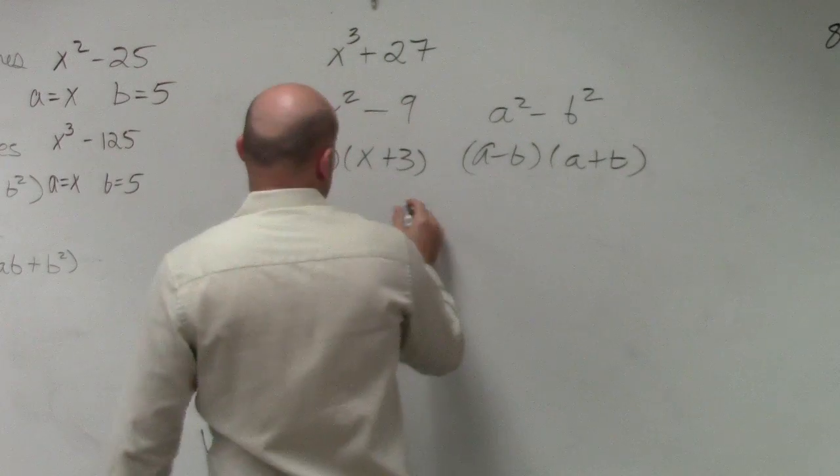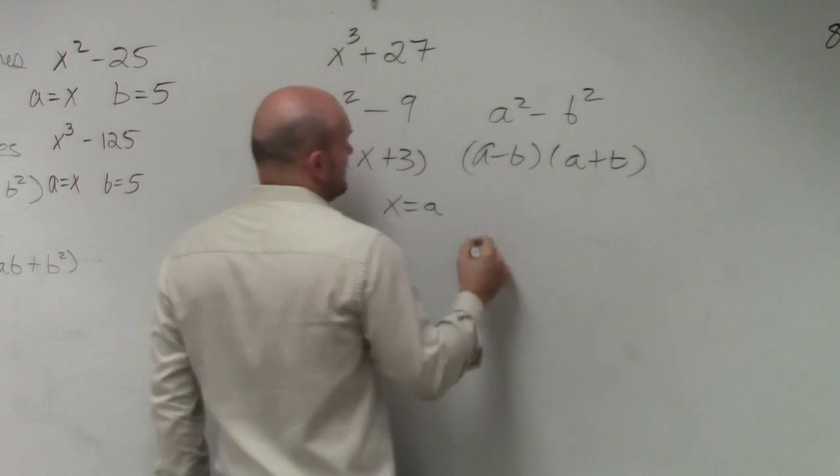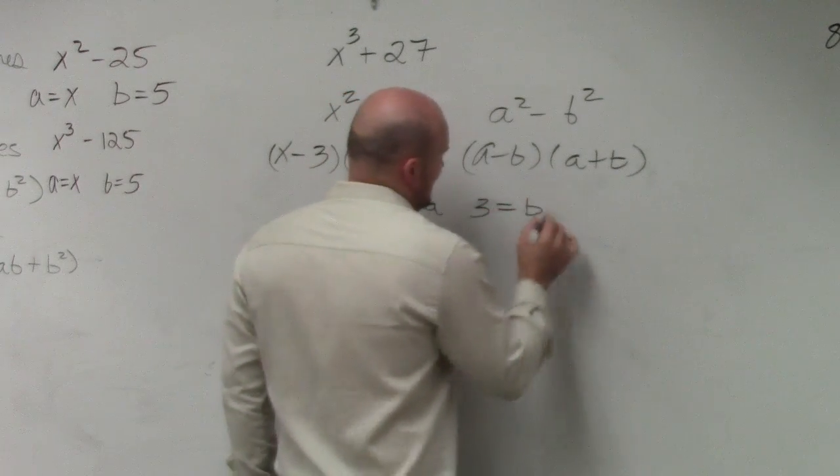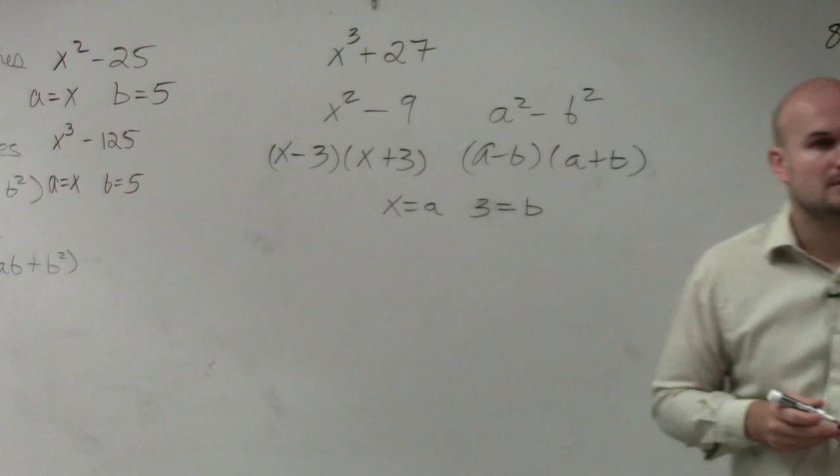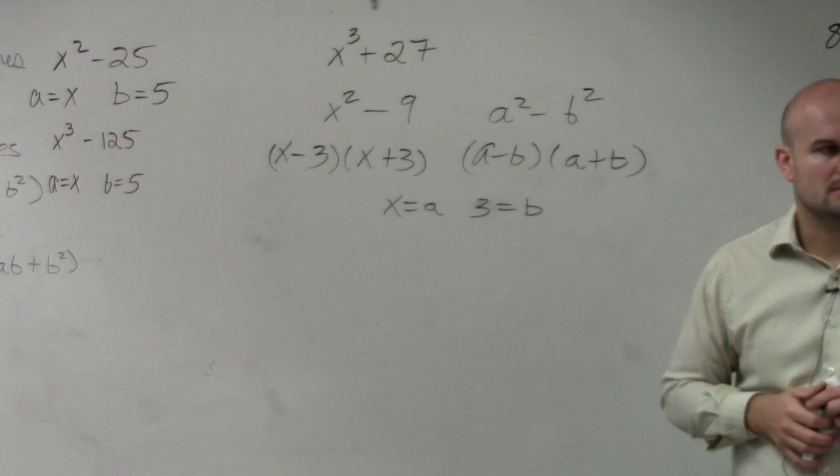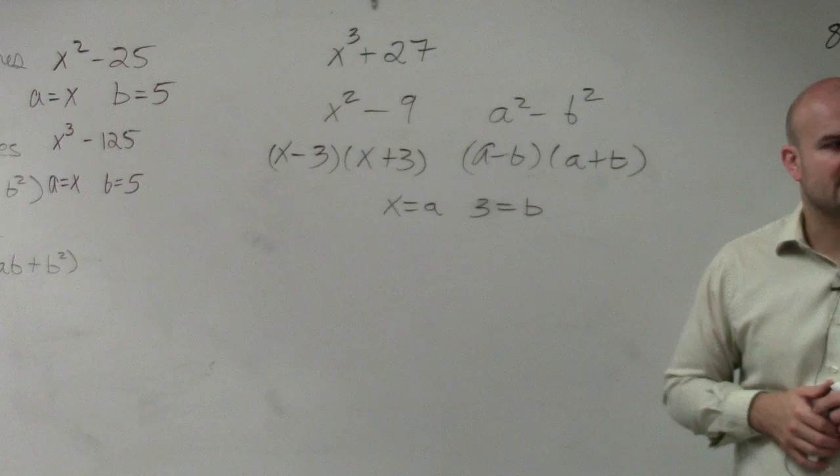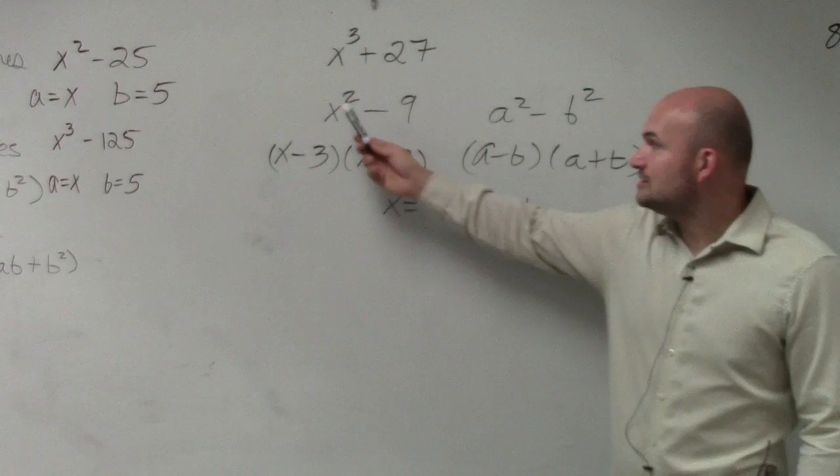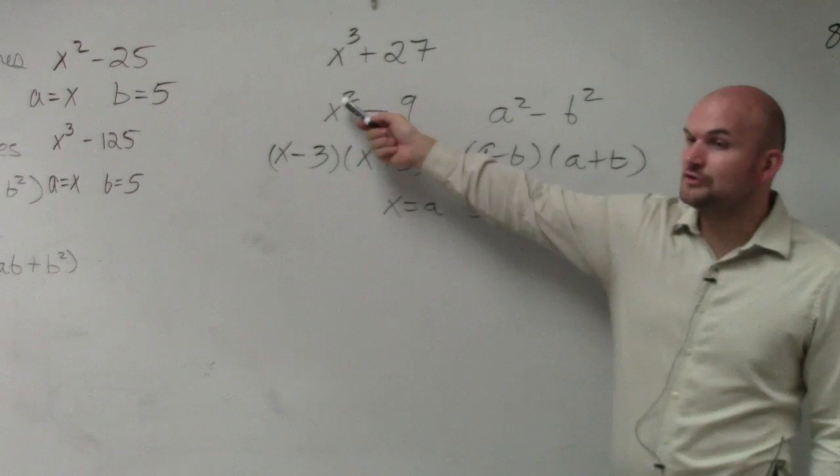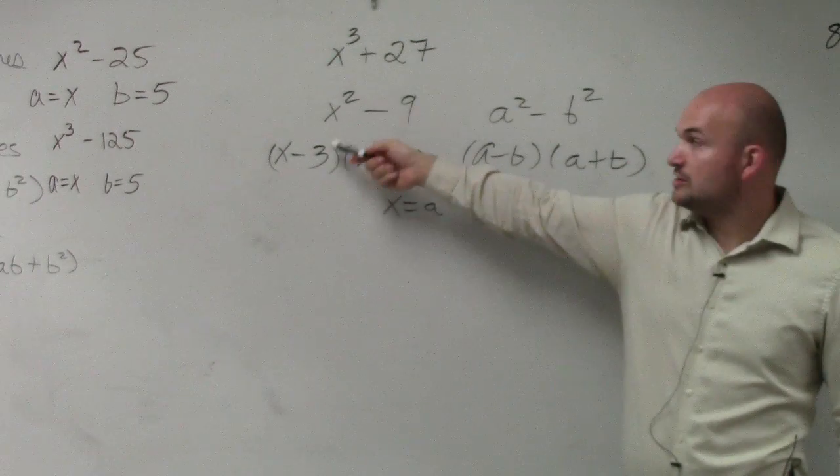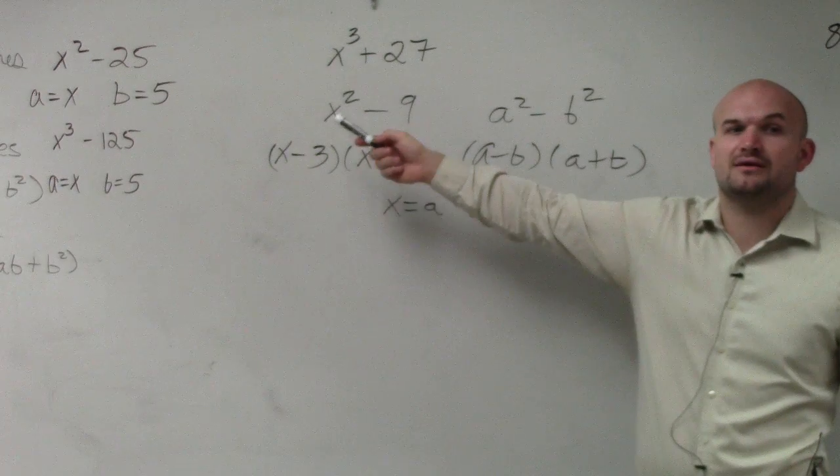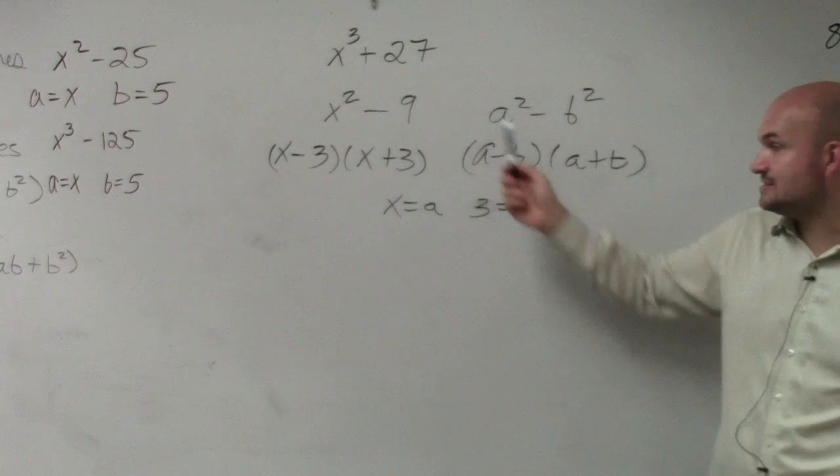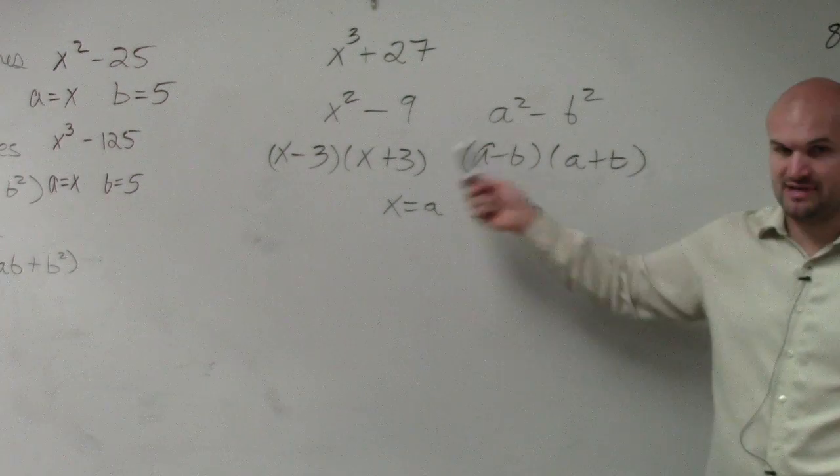So therefore, we can generally say that x is equal to a and 3 is equal to b. Does that make sense? Guys, we'll have time to go over everything. So basically, what I did to find my a and my b is I took the square root of my first term. The square root of x squared is a, and the square root of 9 is 3. That's how I found out what a and b were.